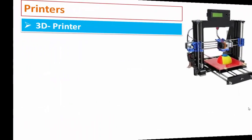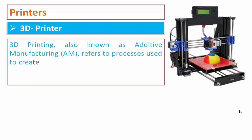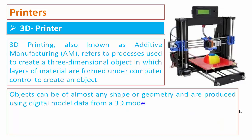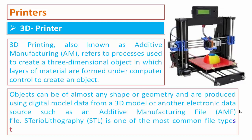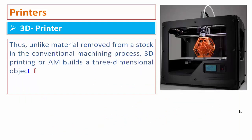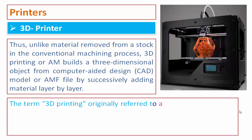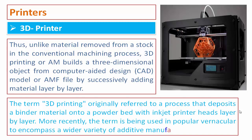3D printing, also known as additive manufacturing, refers to a process used to create a three-dimensional object in which layers of material are formed under computer control. Objects can be of almost any shape or geometry and are produced using digital model data from a 3D model or another electronic data source. STL is one of the most common file types that 3D printers can read. Unlike conventional machining which removes material from stock, 3D printing builds an object from a CAD model or AMF file by successively adding material layer by layer. The term originally referred to depositing a binder material onto a powder bed with inkjet printer heads, but now encompasses a wider variety of additive manufacturing techniques.